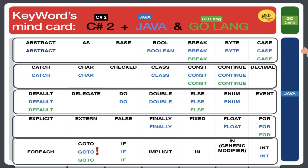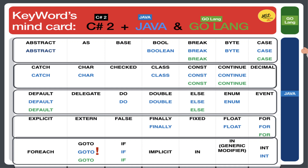Hi guys. Let's get started to compare and repeat three computer languages — first table from the letter A to the letter I — C#, Java, and Go language. Please listen to my British accent. Abstract. As. Base. Bool. Break. Byte. Case. Catch. Char. Checked. Class. Constant. Continue. Decimal. Default. Delegate. Do. Double. Else. Enum. Event. Explicit. Extern. False. Finally. Fixed. Float. For. For each. Goto. If. Implicit. In — generic modifier. Int. Guys. Well done.